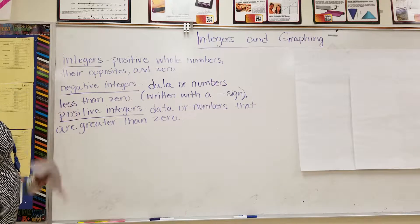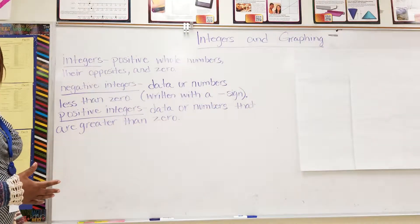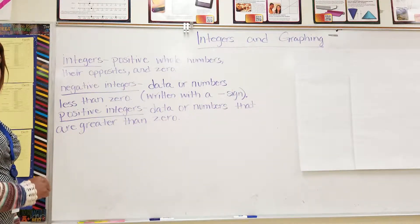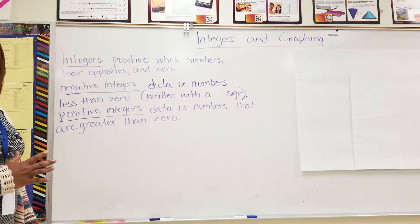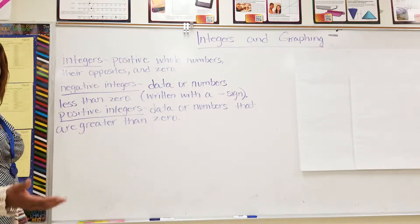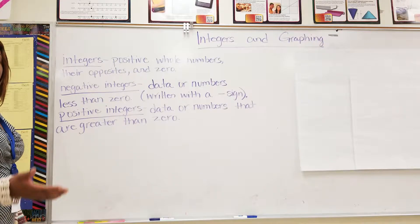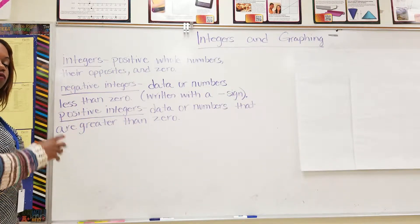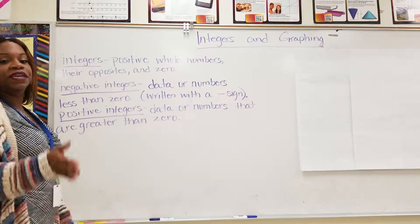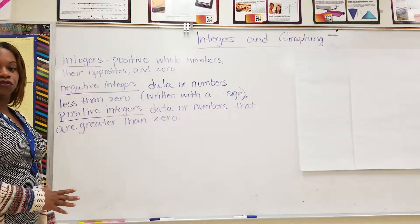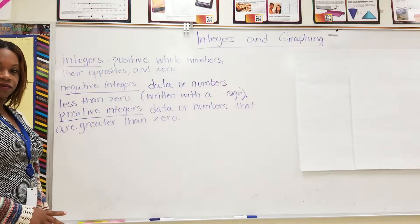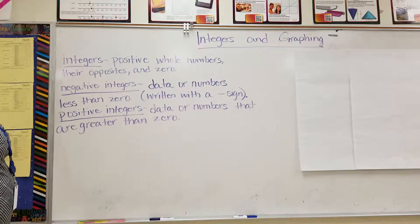They're opposites. On a number line, we have positive numbers and we have negative numbers. Every number has an opposite. So 1 — the opposite of 1 would be negative 1. The opposite of 2 would be negative 2. The opposite of 3 would be negative 3. And zero.